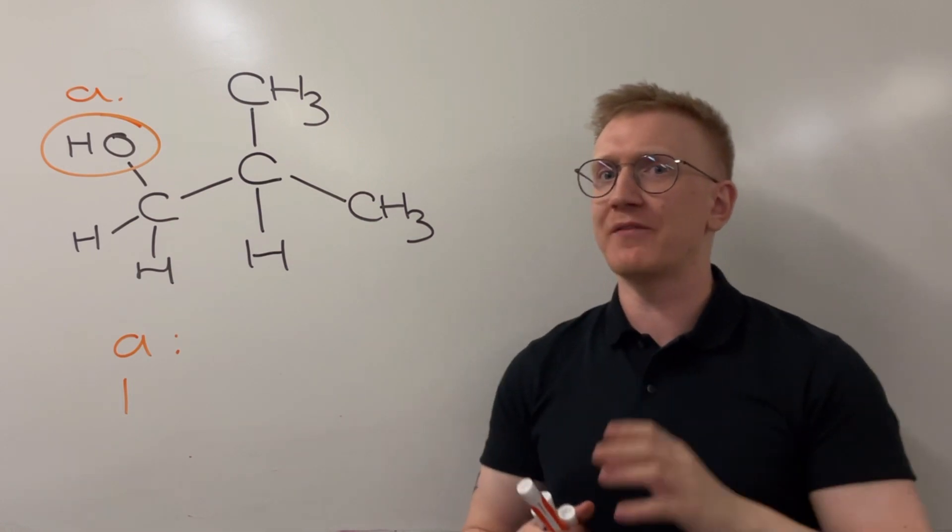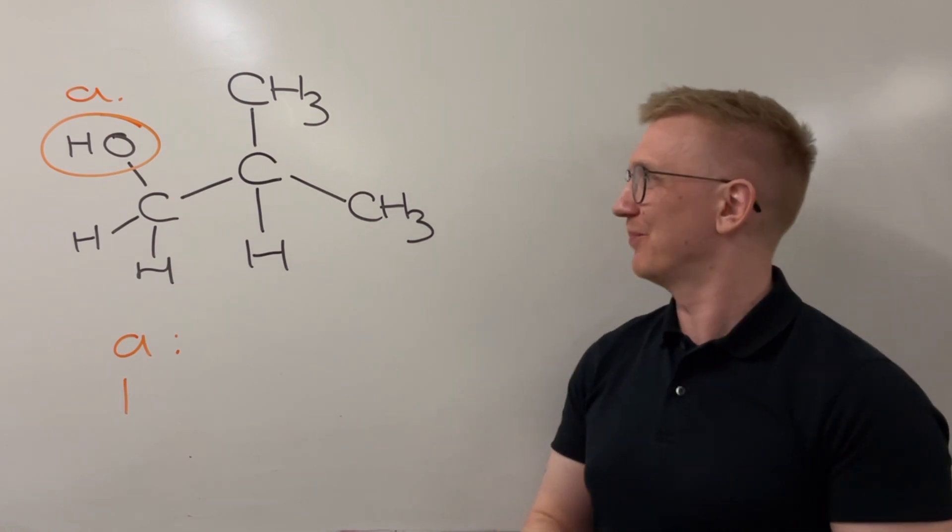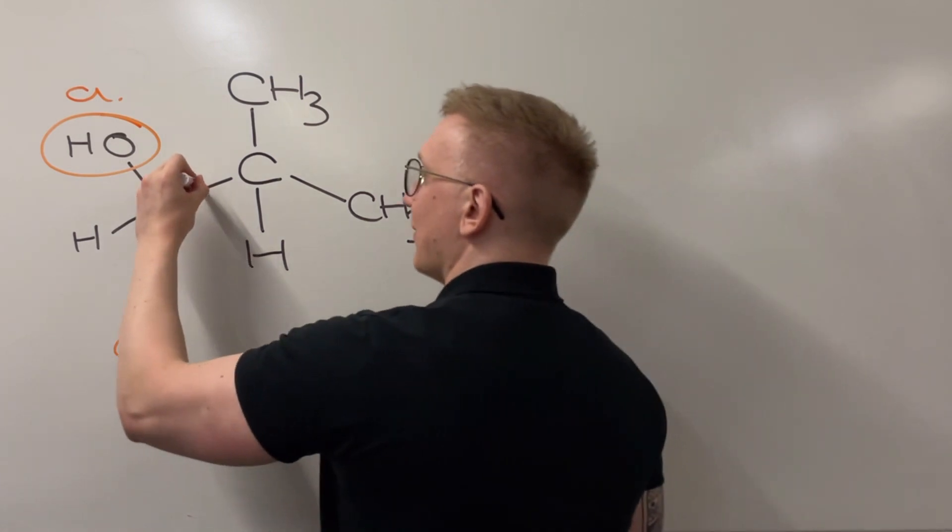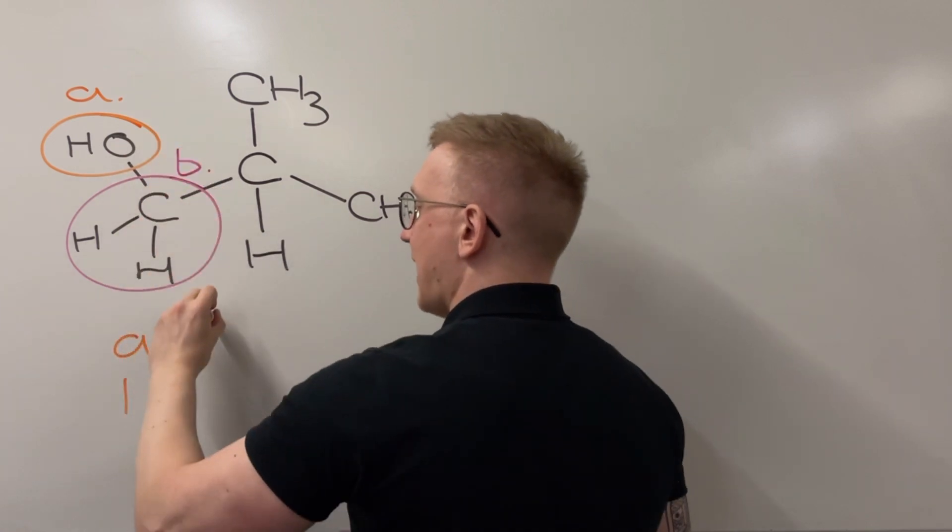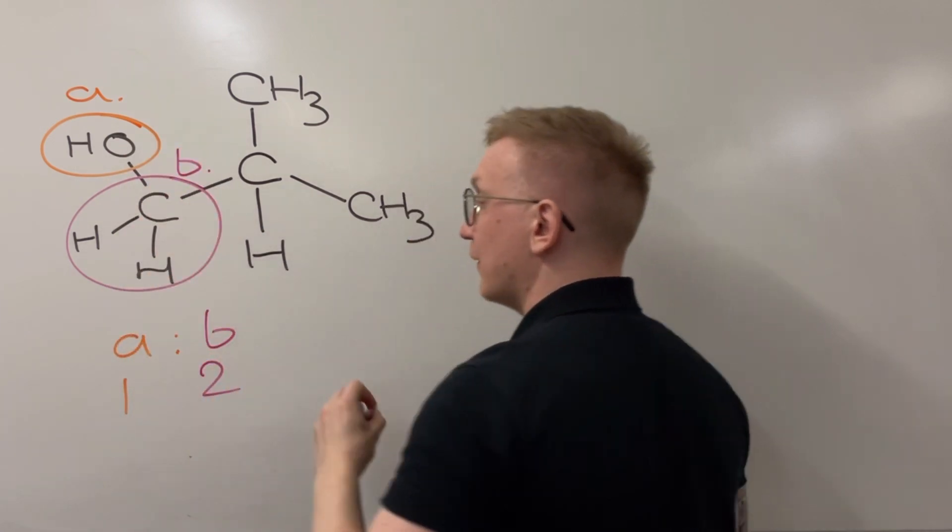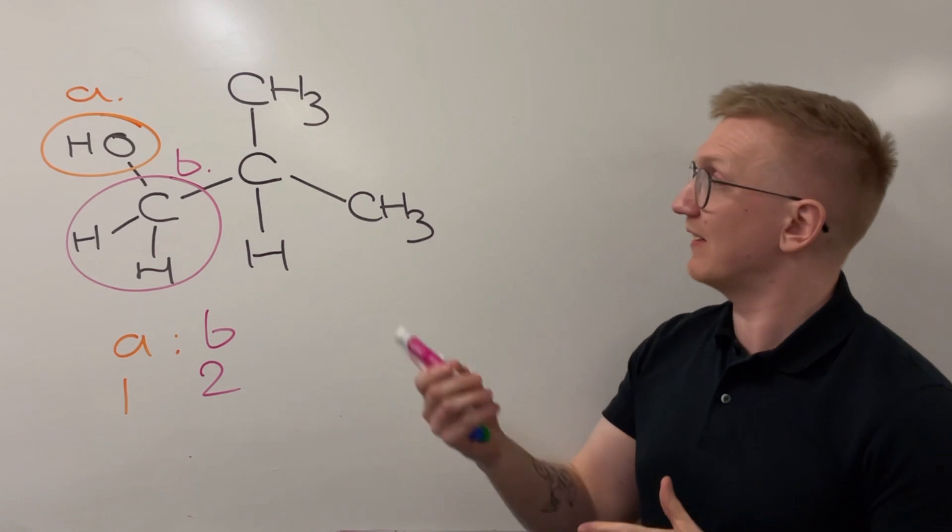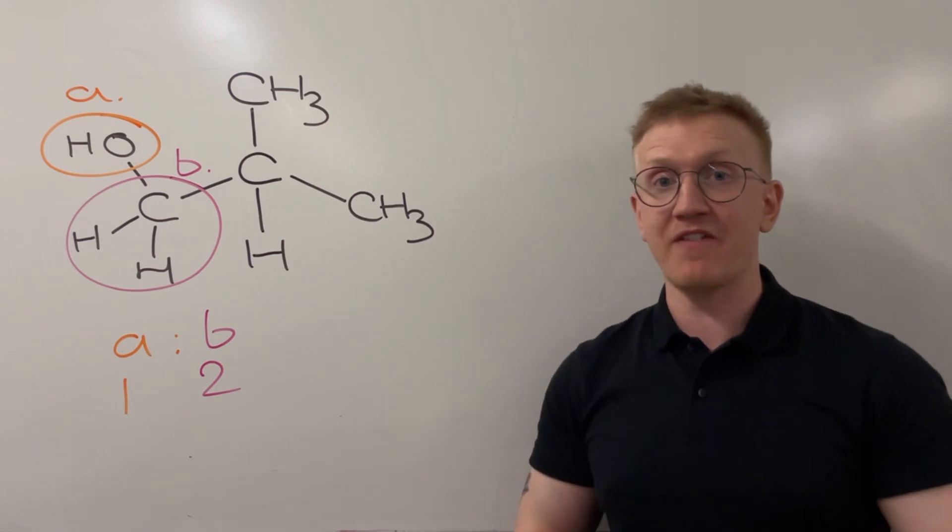Next up then, moving through the molecule here, I'm going to have an environment for this CH2 group which I'm going to call B. And B I would expect to have a two ratio compared to the other peaks because we can see there are two hydrogens within that environment.